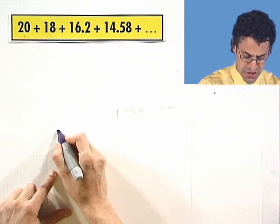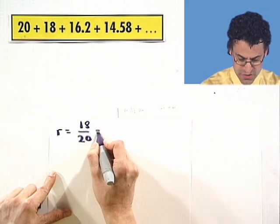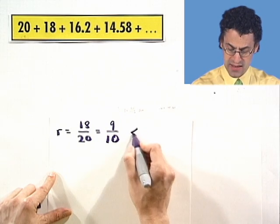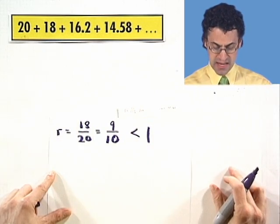Let's compute the ratio. The ratio is going to be 18 over 20, which equals 9 over 10. And notice the absolute value is less than 1. So in fact, this infinite series is going to converge.